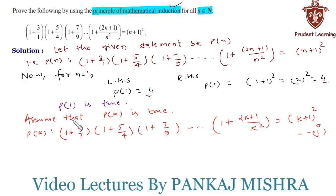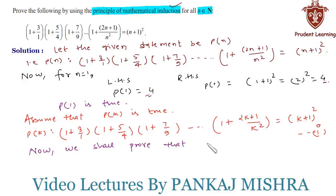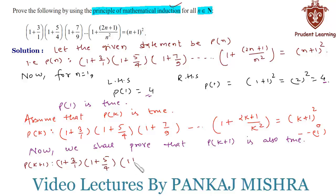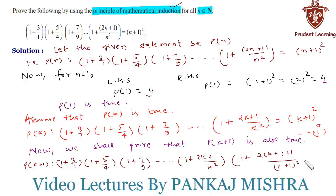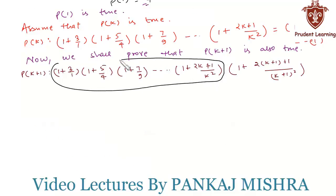In our final step, we shall prove that P(k+1) is also true. That is, P(k+1): (1 + 3/1) × (1 + 5/4) × (1 + 7/9) × ... × (1 + (2k+1)/k²) × (1 + (2k+3)/(k+1)²).